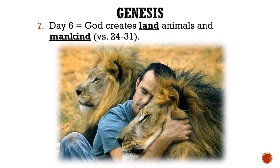And then on the sixth day, God creates land animals and mankind. In verses 24 and 25 of Genesis chapter 1 it says, 'And God said, Let the earth bring forth the living creature after his kind, cattle and creeping thing, and beast of the earth after his kind. And it was so. And God made the beast of the earth after his kind, and cattle after their kind, and everything that creepeth on the earth after his kind. And God saw that it was good.' Just as with the plants, each animal was created after its kind. This refers to the species of animals like canine and feline, but not necessarily to each individual subspecies like a Rottweiler or a Doberman.